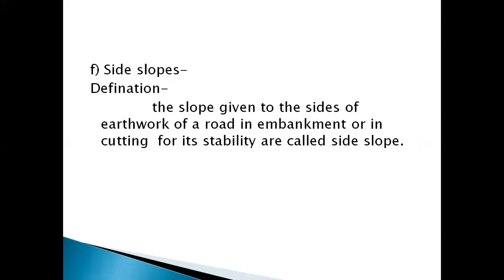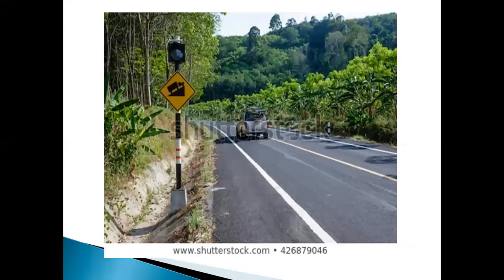The next term is side slopes. The slope given to the side of earthwork of a road in embankment or cutting for its stability is called a side slope. Looking at this image, we can see the slope is provided at the edge of the road to give stability to the road. This slope is called the side slope.